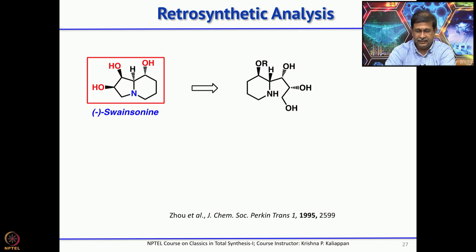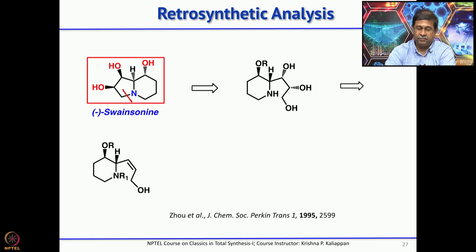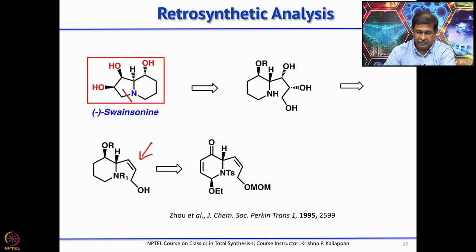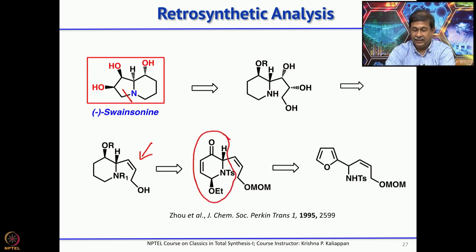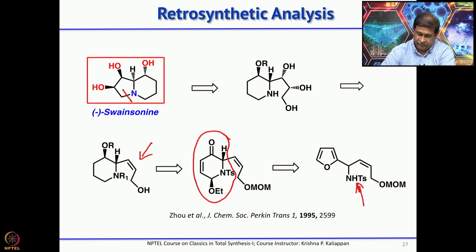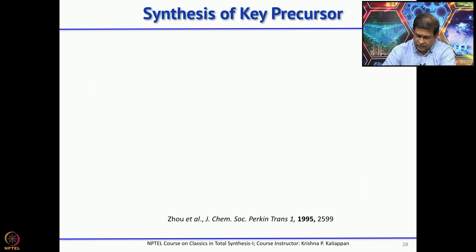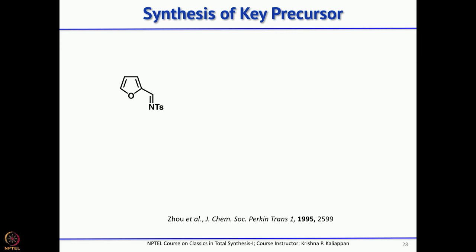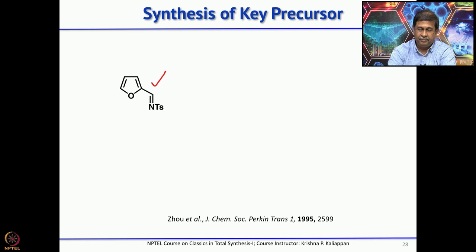From a retrosynthetic point of view, the first disconnection gives the corresponding triol. The triol can be obtained from this allylic alcohol by Sharpless asymmetric dihydroxylation. This in principle can be obtained from the 6-membered lactam, which is obtained from the corresponding furfuryl amine — the tosylated amine. This is obtained from simple furfural. So his total synthesis started from furfural, converted into the corresponding amine by treating with para-toluenesulfonamide.